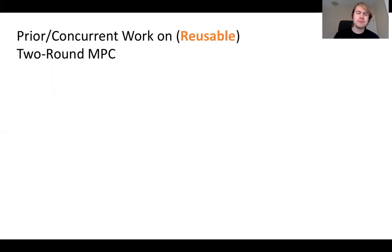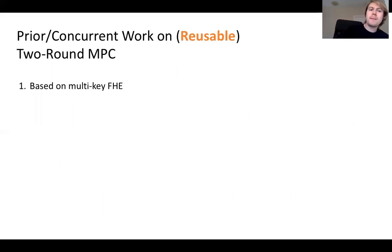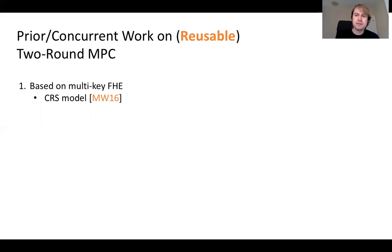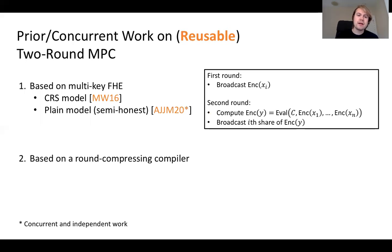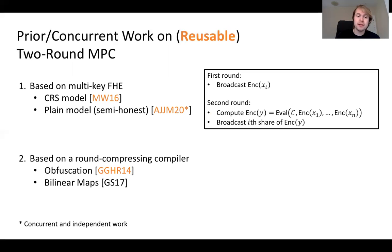There are a number of prior works on two-round MPC and also on reusable two-round MPC. There are really two paradigms for developing two-round MPC. The first is based on fully homomorphic encryption, with an initial instantiation given by Mukherjee-Wichs and later improved by AJJM, who removed the need for a CRS when considering semi-honest adversaries.